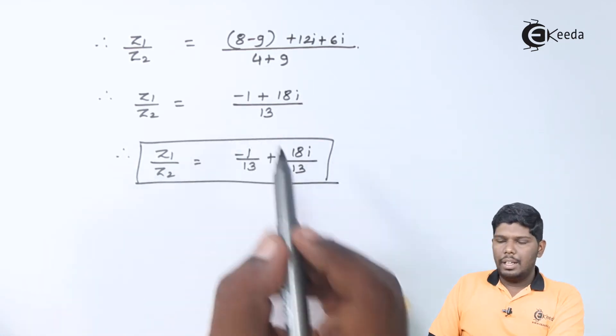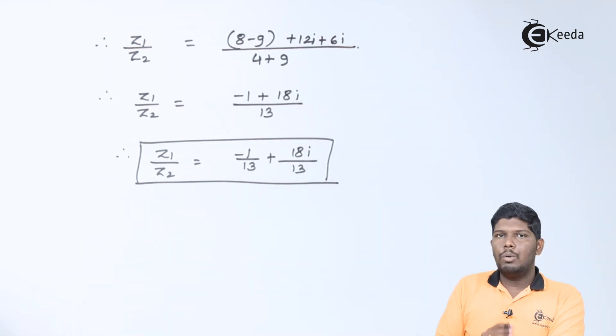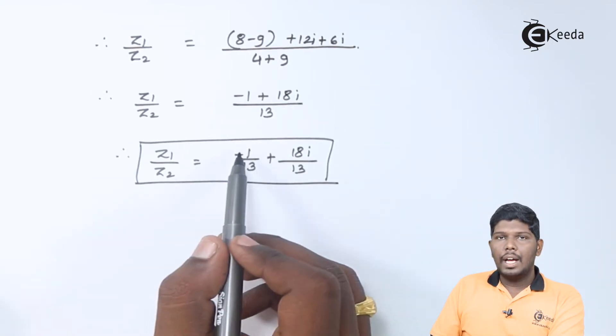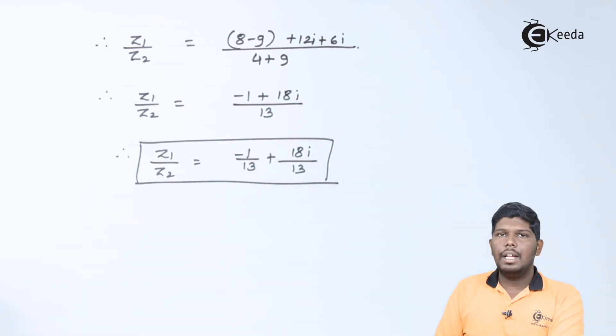On separating 13, we have minus 1 by 13 plus 18i upon 13. Remember, whenever we do algebra between two complex numbers, the final answer should be written in a standard form that is x plus iy. So here you can directly say that the real part is minus 1 by 13 and the imaginary part is 18 by 13.